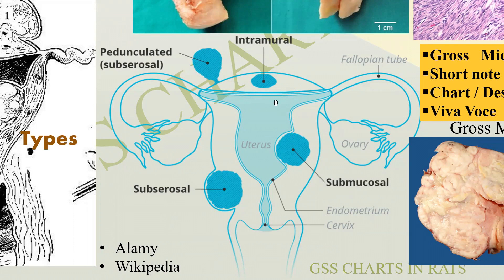Look at the locations. This is the mucosa — immediately beneath it the tumor is located, so it is called a submucosal fibroid or leiomyomata. This is the outer layer or the serosa, and beneath that I am able to see a structure, so it is called subserosal. This one is right in the middle of the muscle — I call it intramural. Sometimes there can be a stalk-like structure supporting it going outside the uterus, and it is called pedunculated. These are the various types of leiomyomata.